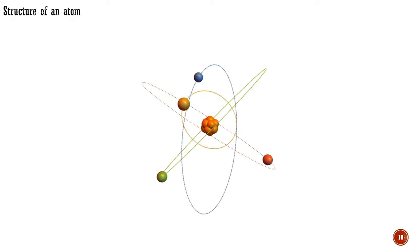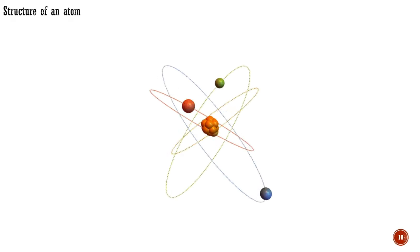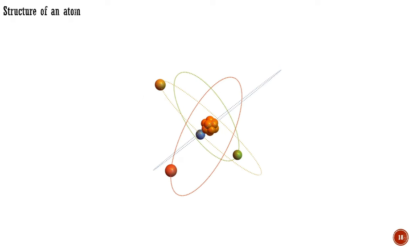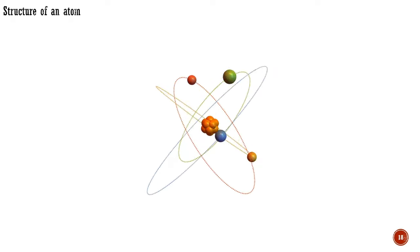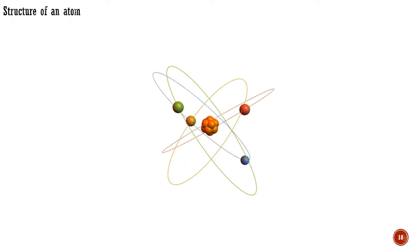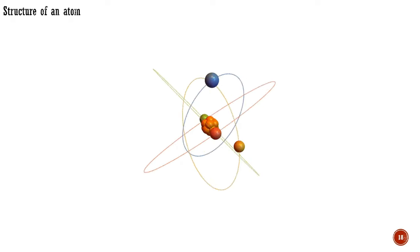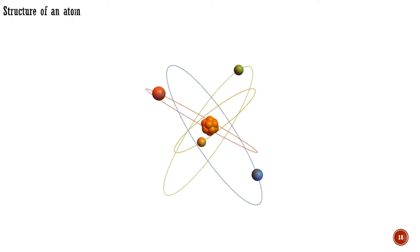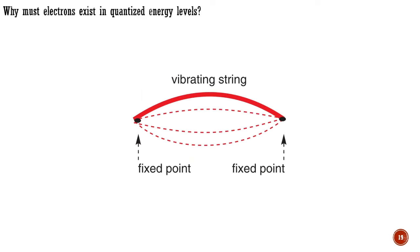You may have heard of an electron orbiting a hydrogen nucleus previously, as that is one way of thinking about an atom as a miniature solar system with the nucleus as the sun and the electrons as planets. This model breaks down when examined in detail, as we shall see shortly. But for now, we can use it to understand why electrons must exist in quantized energy levels.